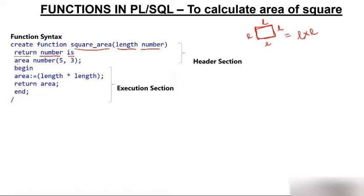We declare a variable called 'area' with data type NUMBER(5,3). The format (5,3) is for handling decimal values — if you only write NUMBER, it will only take integer values and not decimal values. With NUMBER(5,3), up to 5 digits can appear before the decimal point and 3 digits after the decimal point.